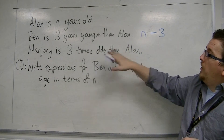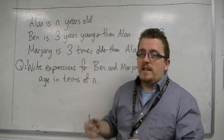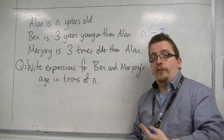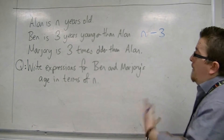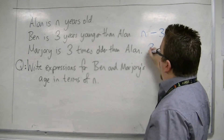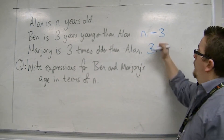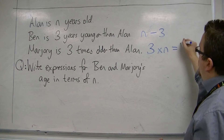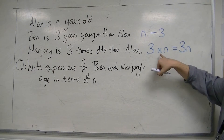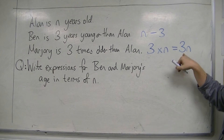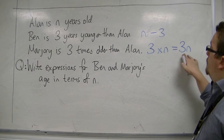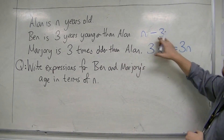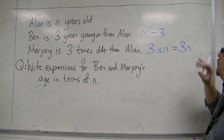Marjorie is 3 times older than Alan. So if Alan is n years — say 10 years — then Marjorie would be 3 lots of 10 years, which is 30 years. So Marjorie is 3 lots of n years old. We can write that as 3 times n, which can be abbreviated to 3n. Shorthand for a number times a letter is just written as 3n — you don't bother writing the times sign. So Ben's age is n minus 3, and Marjorie's age is 3n.